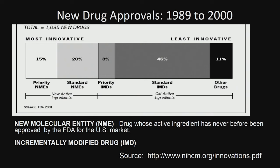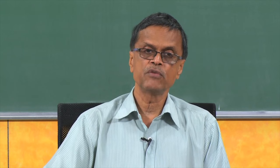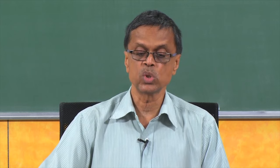Looking at some statistics from 1989 to 2000: NME stands for new molecular entities, meaning totally new compounds which have gone for FDA approval. Only about 15% went for approval as priority and about 20% as standard new molecular entities. Then we have about 6% that is called IMD — incremental modified drug — where an already approved drug has certain changes made, like converting it from a liquid form to solid form or changing the crystallization procedure.